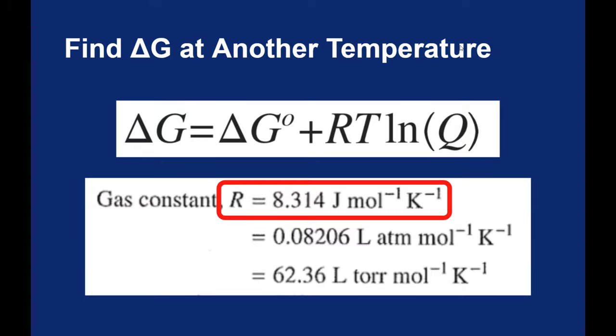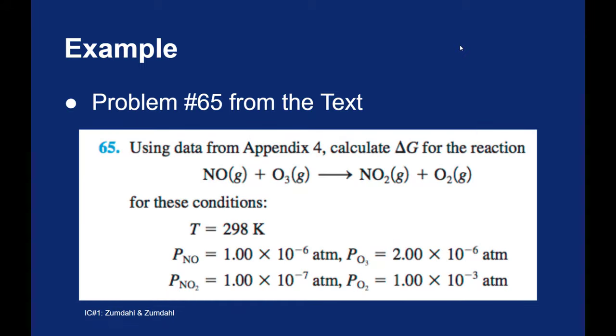So let's take a look at this equation in an example. And the best example I could find was actually from the back of this chapter. This is number 65 from the text. Using our favorite appendix, appendix 4, I want to calculate the ΔG for this reaction.